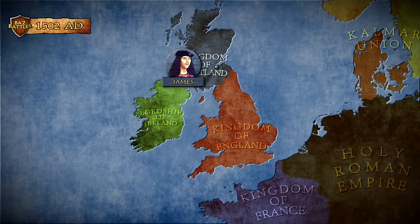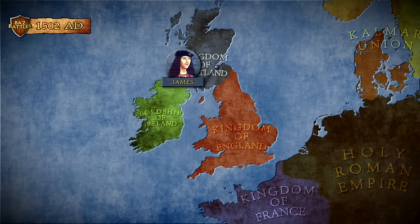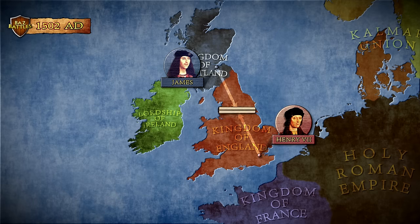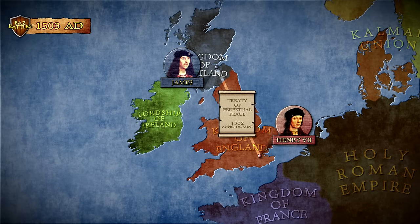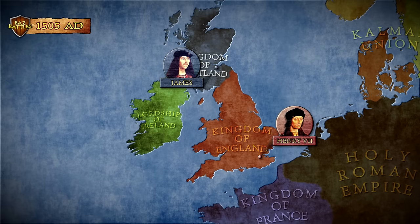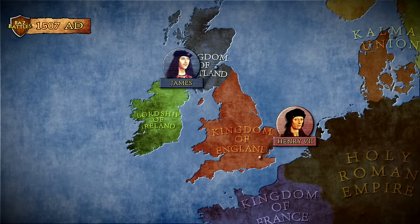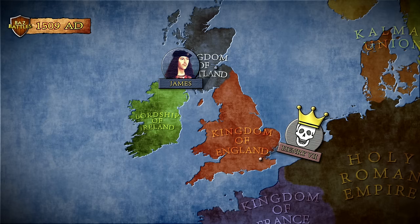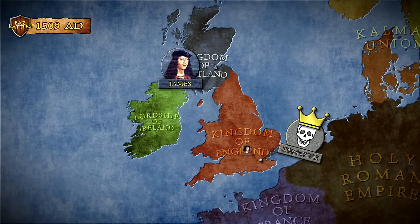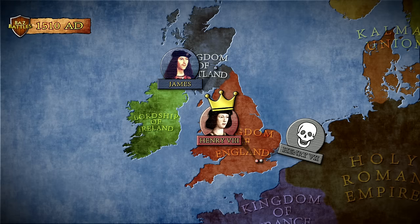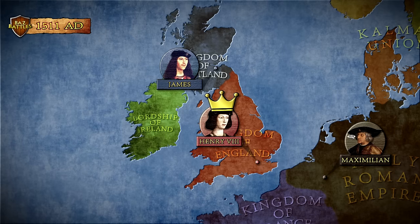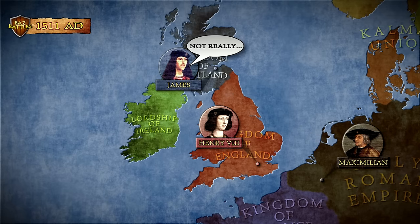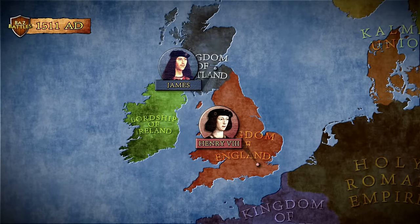Despite the initial conflicts with England, he stabilised mutual relations by signing a Treaty of Perpetual Peace with English King Henry VII and marrying his daughter Margaret a year later. James' international progress faced its first obstacles in 1509 when Henry VII died and the crown was passed to his ambitious young son Henry VIII, who soon got involved in the ongoing Continental conflict and joined the Holy League against France. James found himself in a difficult position, being an ally to both England and France.